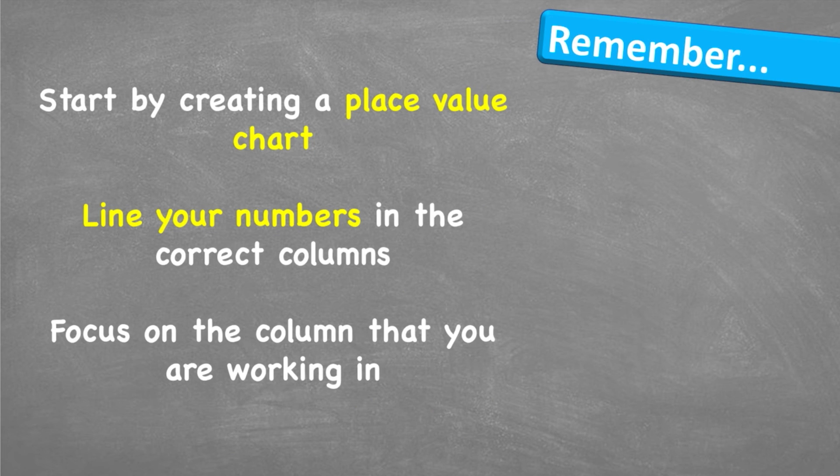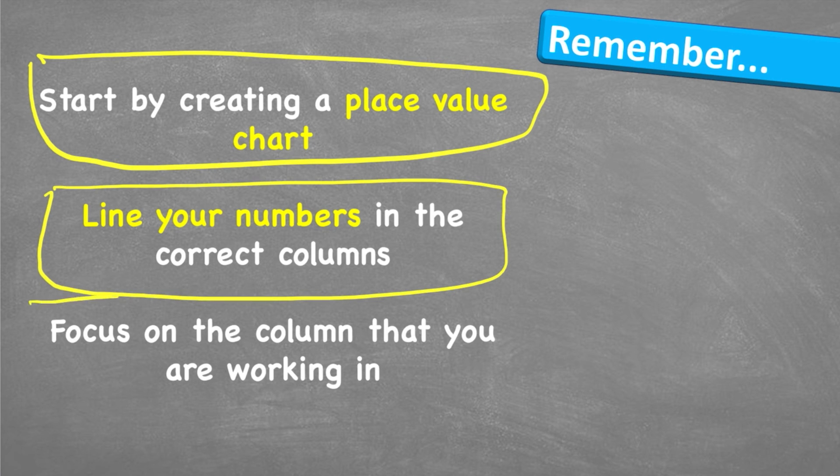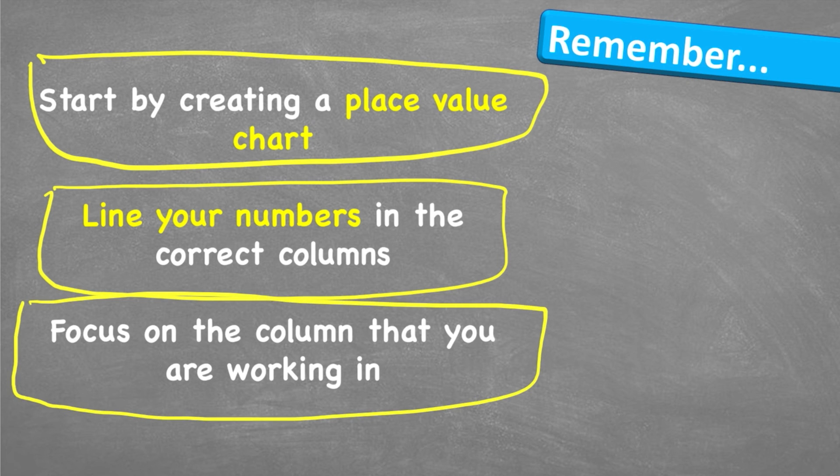Let's look at what to remember. Start by creating your place value chart. This is really important. It will help you understand which column we are adjusting. Line your numbers up into the correct columns and then focus on the column that is the one you're working on. If you're looking at 10 more, you're going to be working in the tens column. If you're looking at 100 less, you're going to be looking in the hundreds column. And in the future, when you're looking at bigger numbers, when you're looking at a million more, you'll look in the millions column. So this is a really good practice to get into the habit of.